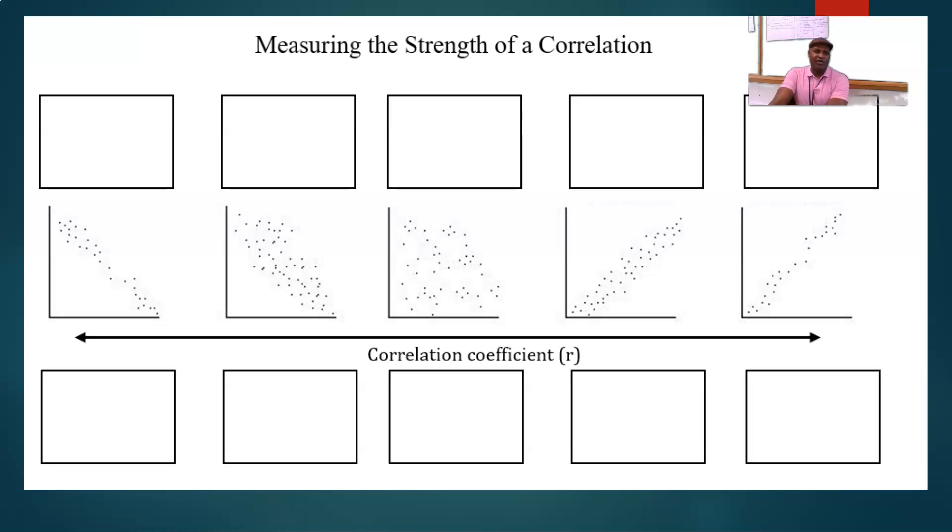We need to review the strengths of a correlation. When you have data points, scatter plots that look like this, notice that this data follows a negative slope. And it's tight, it's kind of narrow.